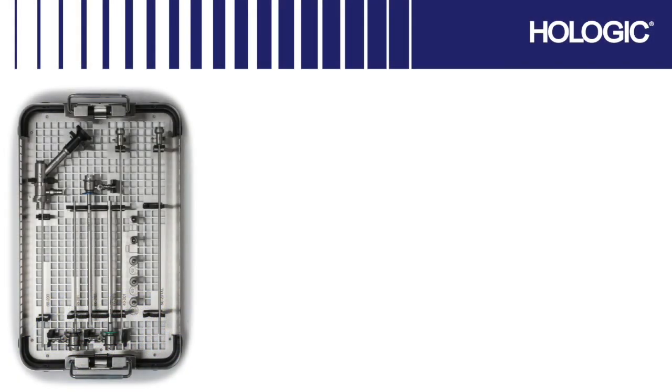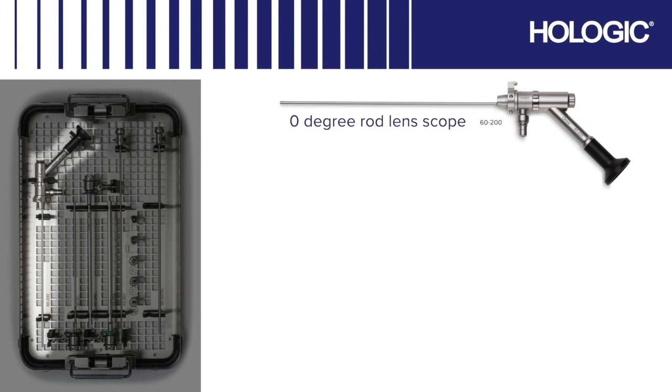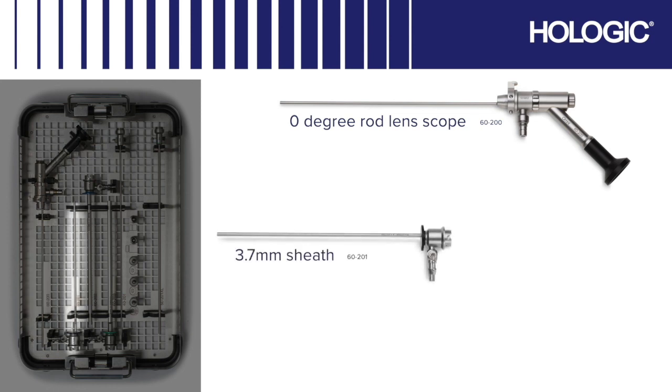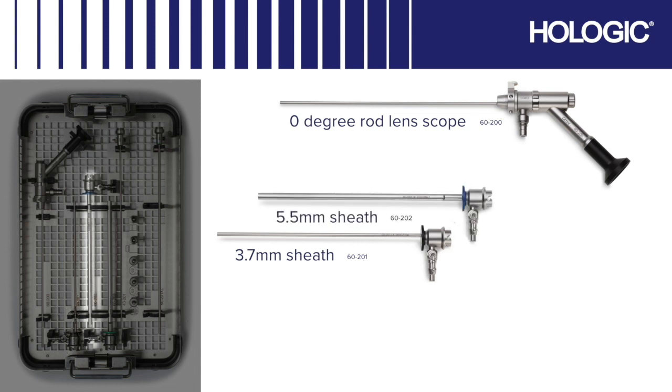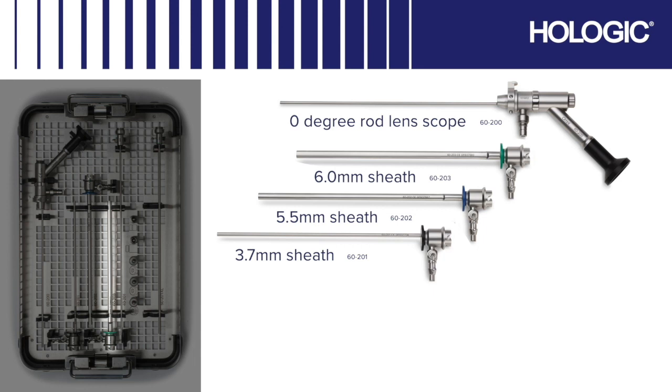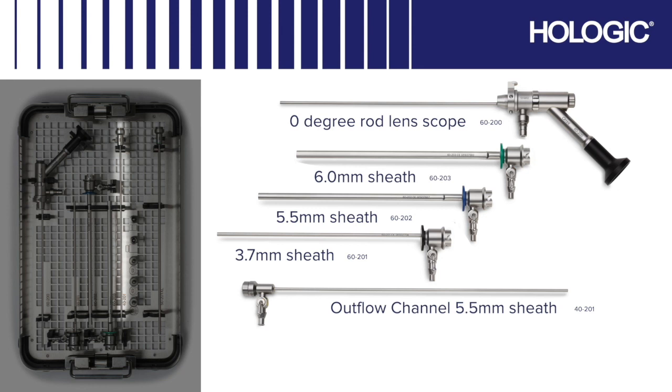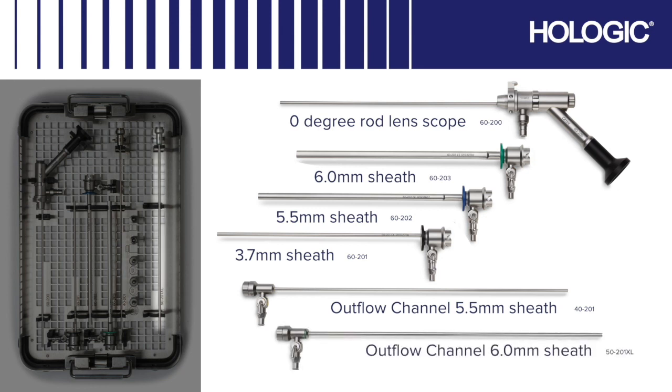The Omni Scope tray consists of the following items: one zero-degree rod lens scope, one 3.7mm sheath marked black, one 5.5mm sheath marked blue, one 6mm sheath marked green, one outflow channel for the 5.5mm sheath non-color marked, one outflow channel for the 6mm sheath marked green, three end caps and two light lead adapters.